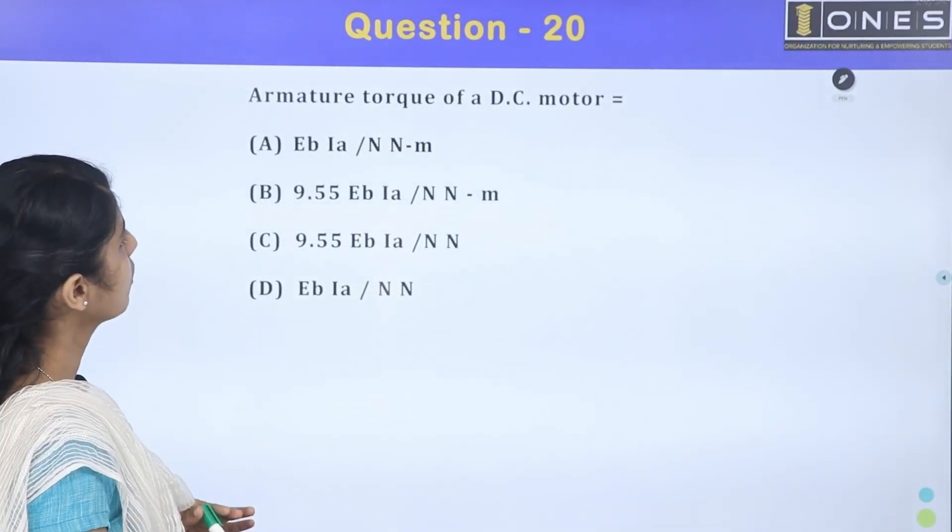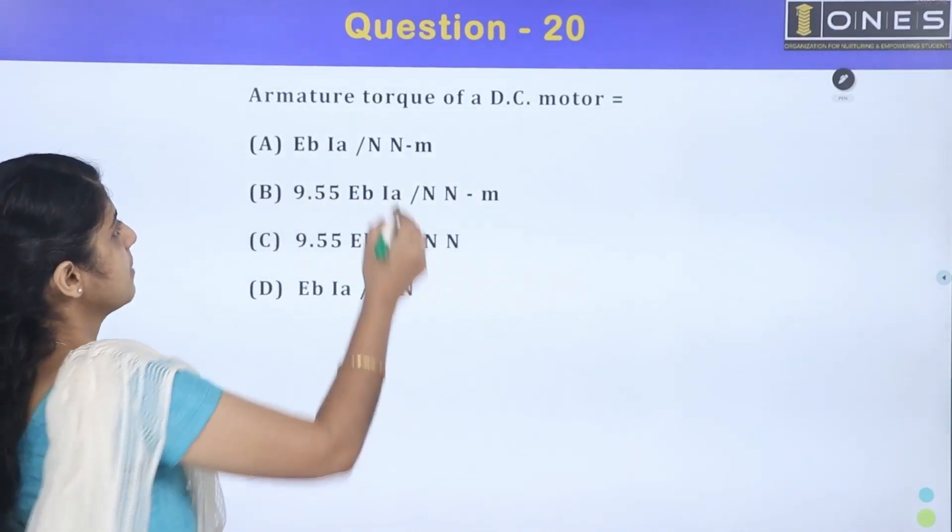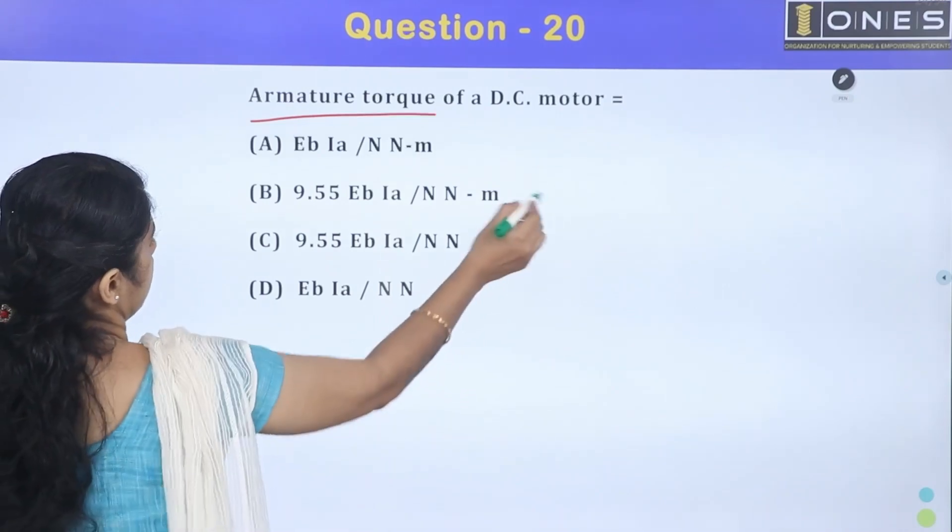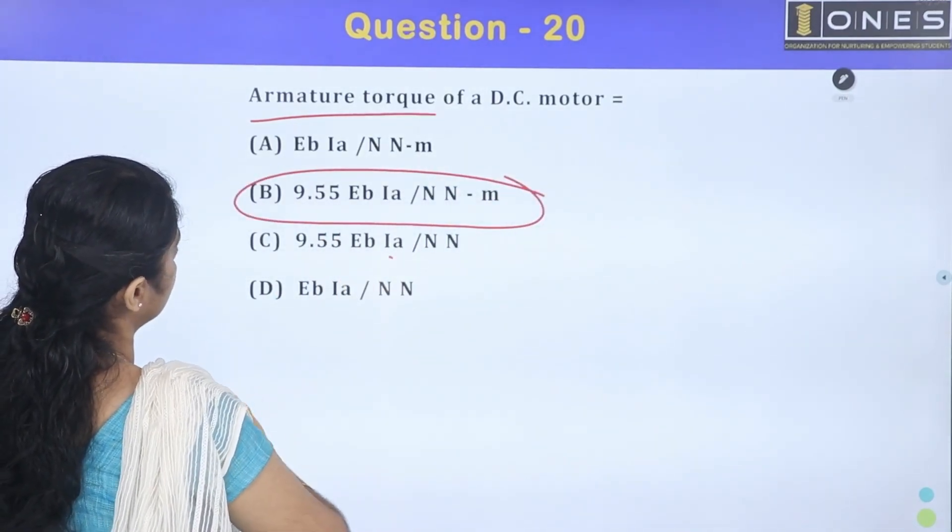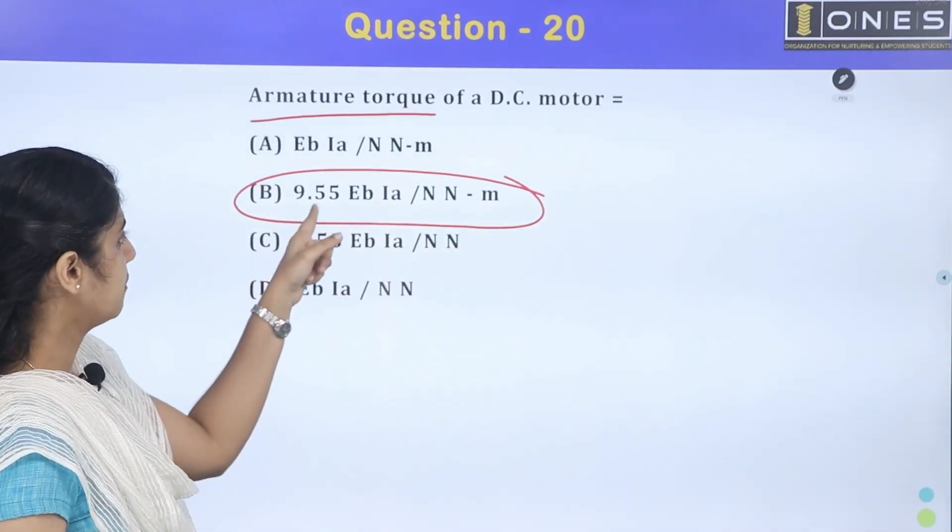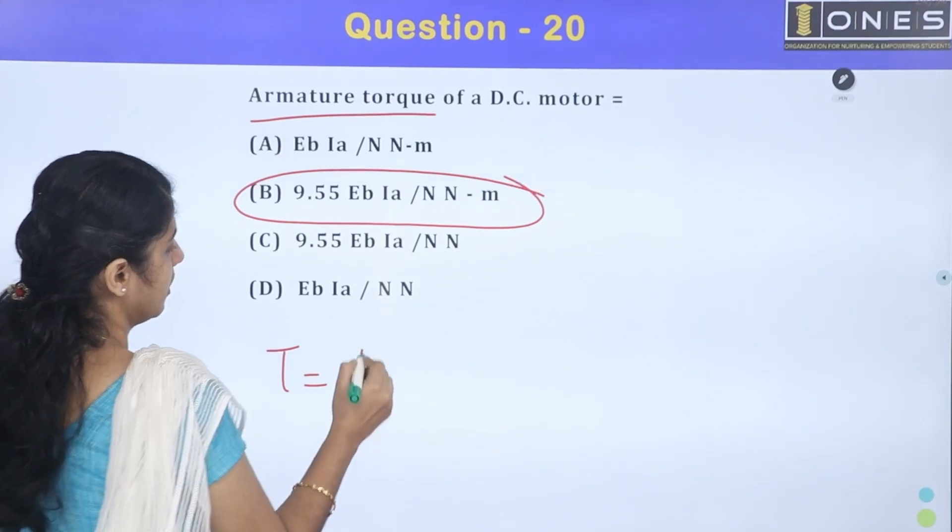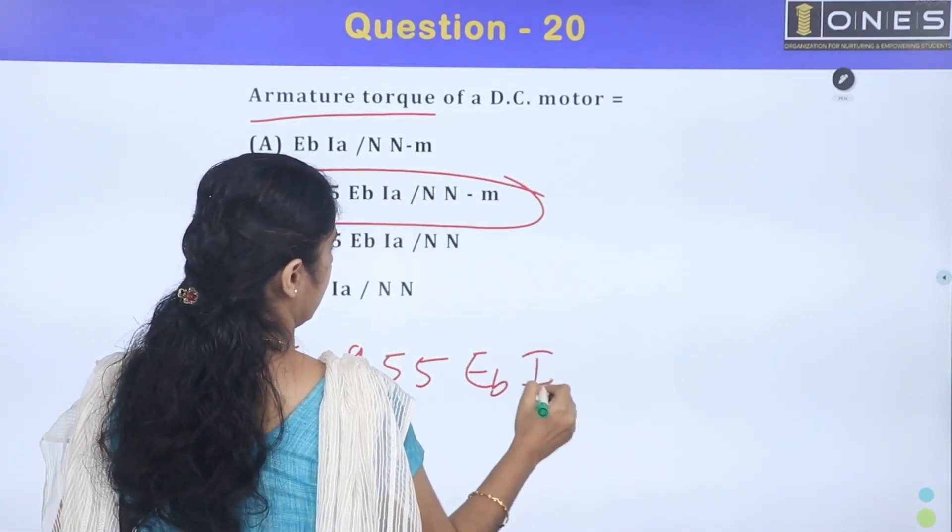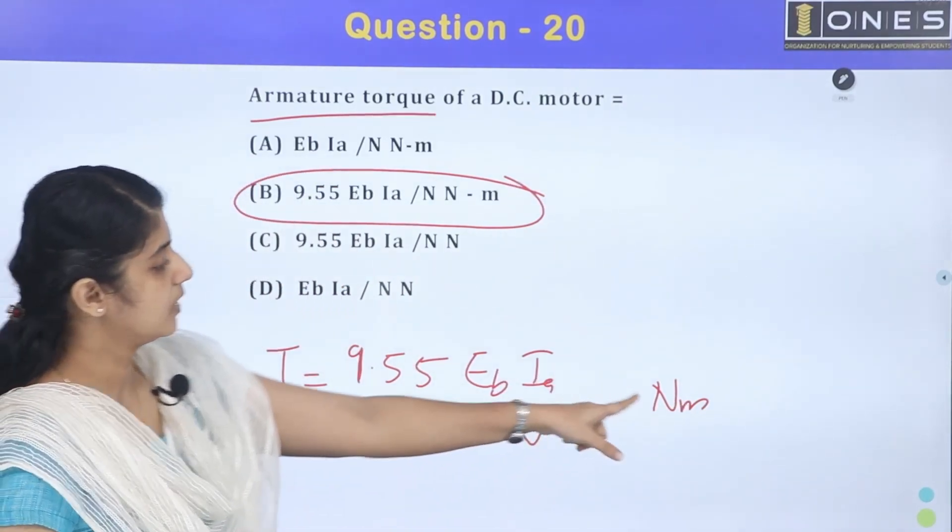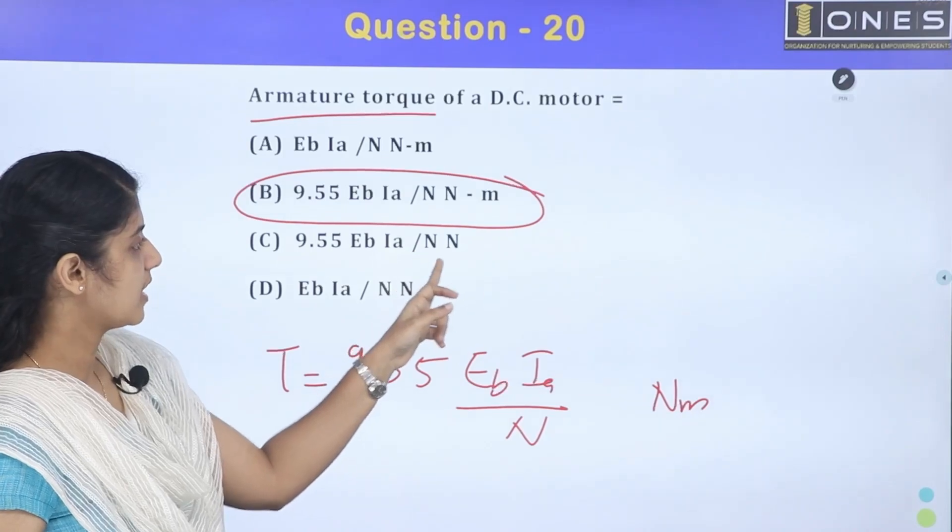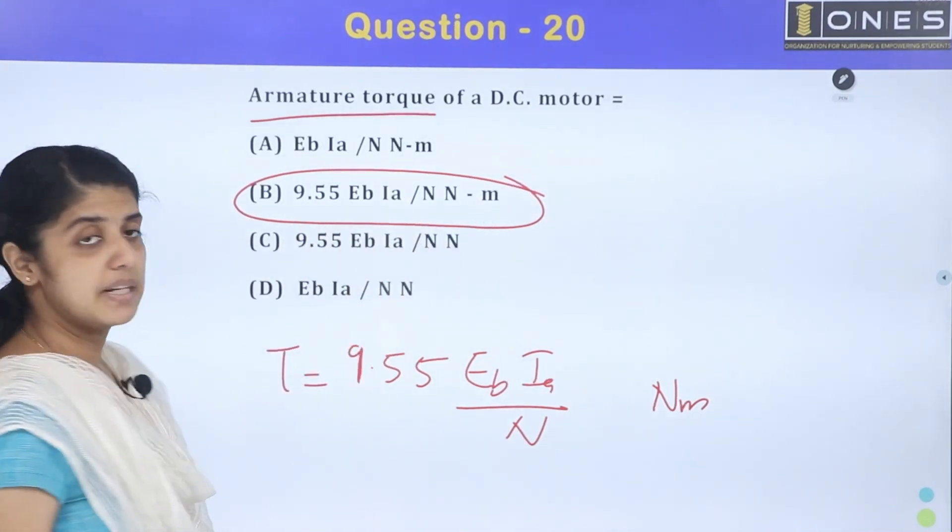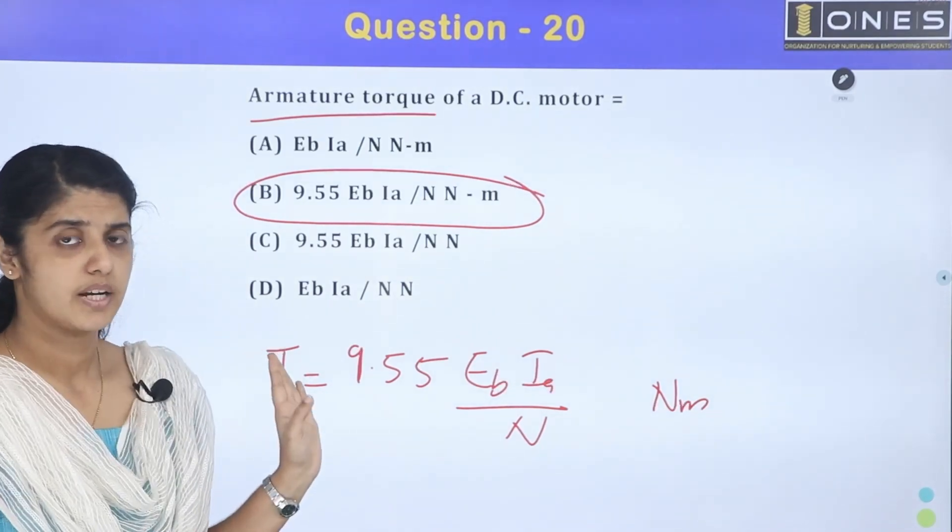The next question is the armature torque of a DC motor. We will learn the torque equation. Option B is the answer. There are two same options with different units. The torque is equal to 9.55 E B I A by N. The torque unit is Newton-meter. There are two options, the same equation but different units. The correct option is Newton-meter. The torque unit is equal to Newton-meter. Okay, take care.